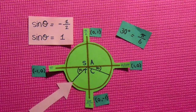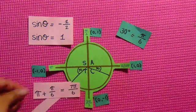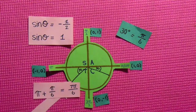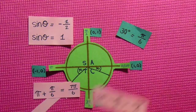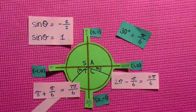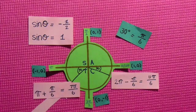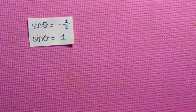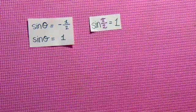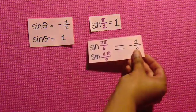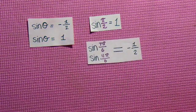So this angle would be π plus π/6, which equals 7π/6. And this one would be 2π minus π/6, which is 11π/6. This means that θ has three values and equals π/2, 7π/6, and 11π/6.